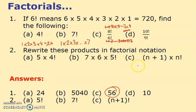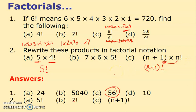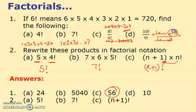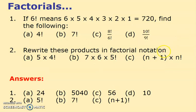These questions get your head around factorial notation. You need to know: 5 times 4! is just 5!. Similarly, (n+1) times n! is just (n+1)!. On the examples: 7×6×5! is 7!. And 10!/9! cancels all terms up to 9, leaving just 10. So the answer is 10.